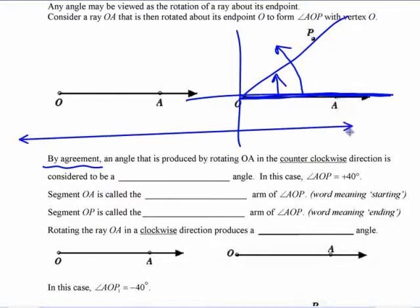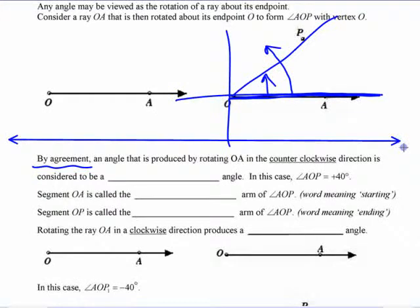When you learn number lines, which way do the positive numbers go? If you have zero here, which way do the positive numbers go? To the right. And that's just because that's the convention.